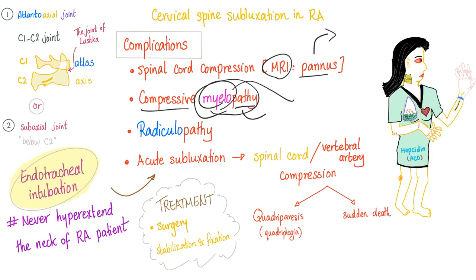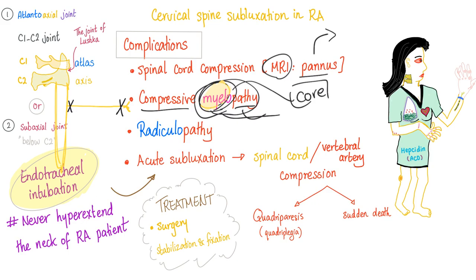Compressive myelopathy — 'pathy' means pathology, 'myelo' means cord, which is why 'myelo' describes both the bone marrow and the spinal cord. Also radiculopathy: if you have a spinal cord, there are two types of nerve injuries. If you injure the nerve in the periphery, that's neuropathy. If you injure the nerve at the root while exiting the spinal cord, that's radiculopathy. If you injure the spinal cord itself, that's myelopathy.